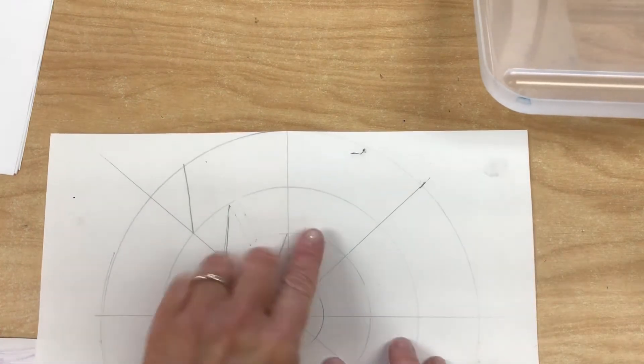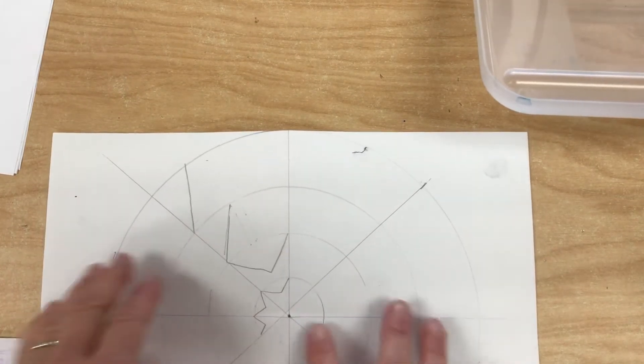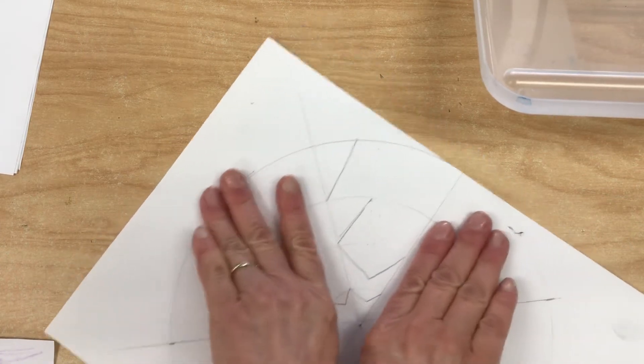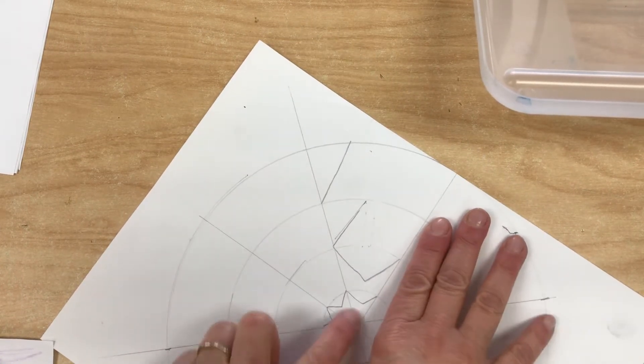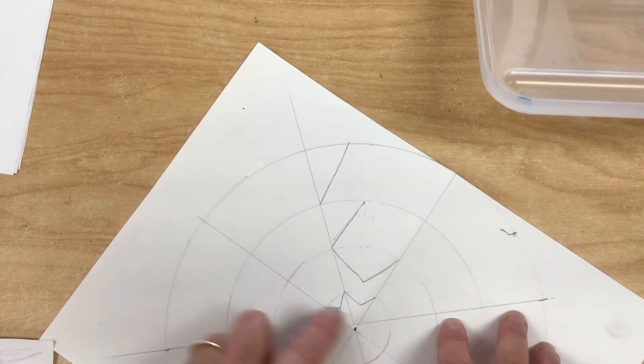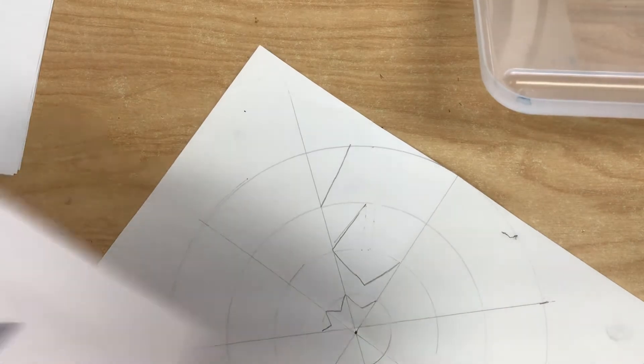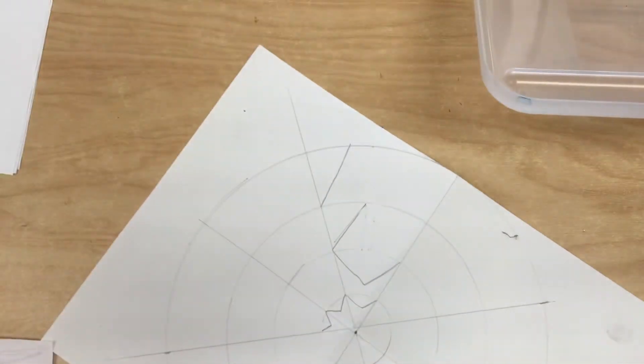As you can see, I started in one section on my radial pattern. That means it comes in from the center out, and you repeat it in each section like this one.